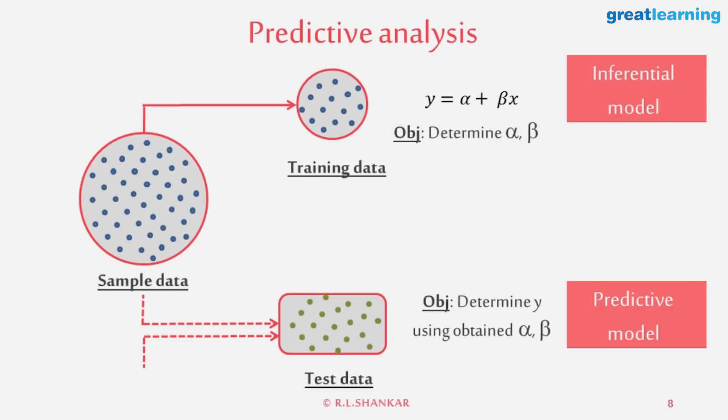Let's say I do a linear regression: Y equals alpha plus beta X. How do I determine if the inferential model is good or not? What is my measure of determining if the model is good or not? I can look at R squared. R squared will tell me if the model is good or not.